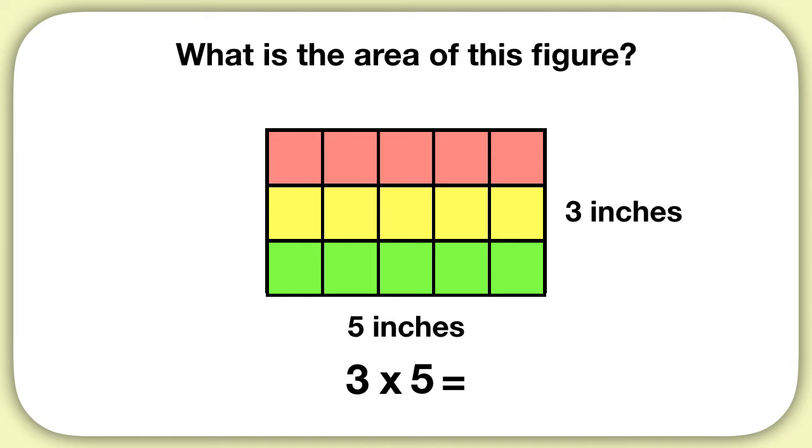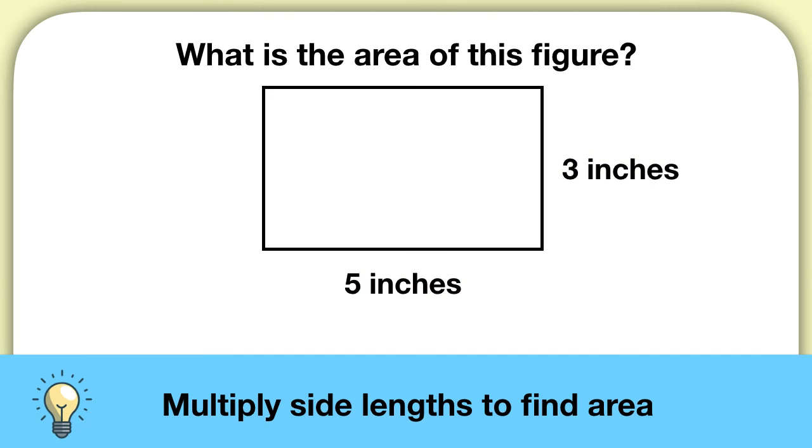Huh. Notice that the three is the same as the three inches we have in our shape. And the five, that's the same as the five inches. So to find the area of a rectangle, all we need to do is multiply the side lengths. We can multiply three times five and get the area is 15 square inches.